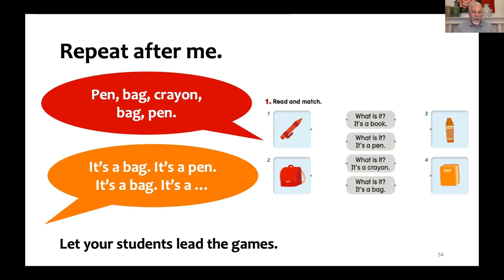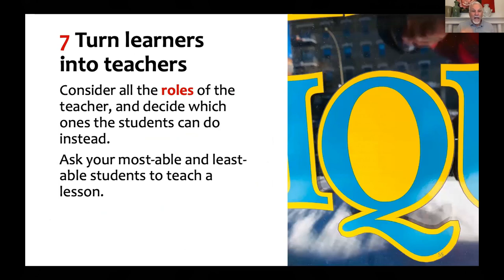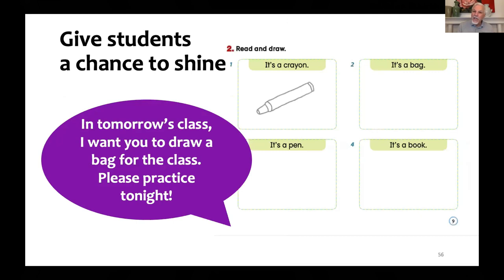Another big trick: let your students lead the games. You don't always have to be in charge — let your students do more of the teaching, let them be in charge for a little bit. It's much more fun for them. Number seven: turn learners into teachers. Consider all of the roles the teacher plays and decide which ones students can do instead. Ask your most able and least able students to teach a little part of a lesson — give them preparation the day before: 'In tomorrow's class, I want you to draw a bag for the class, please practice tonight.' That student practices, then inspires others — if she can do it, I can do it too.